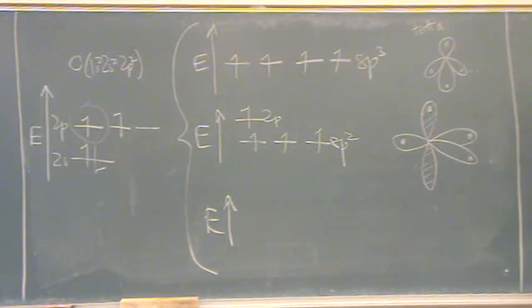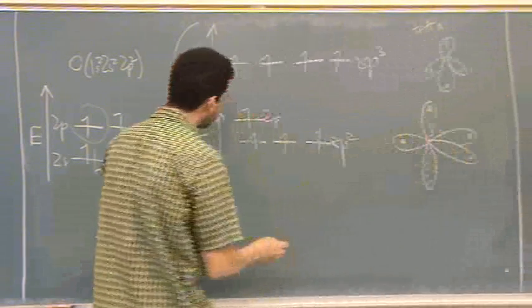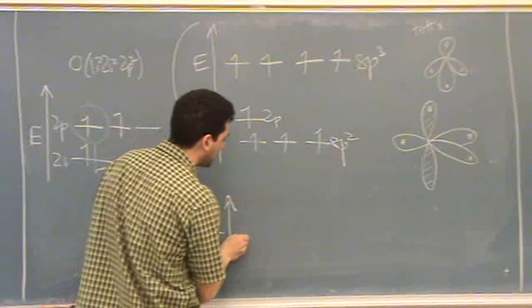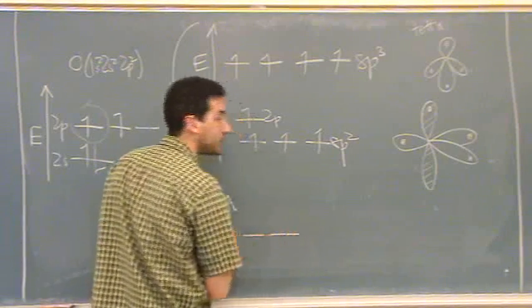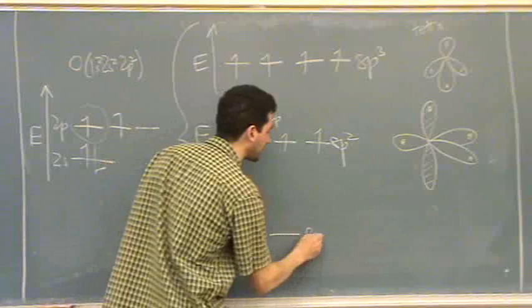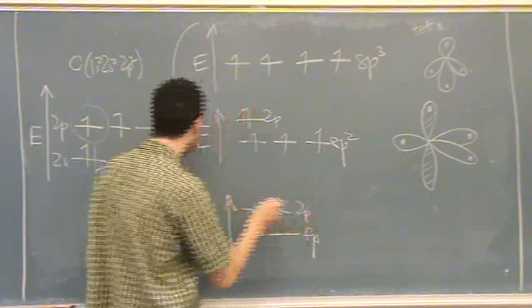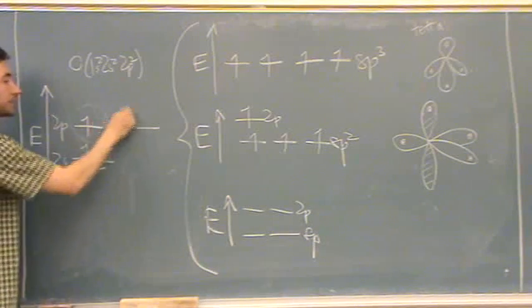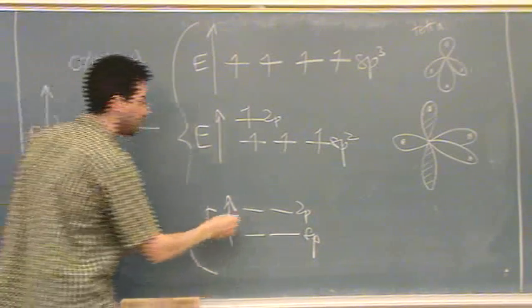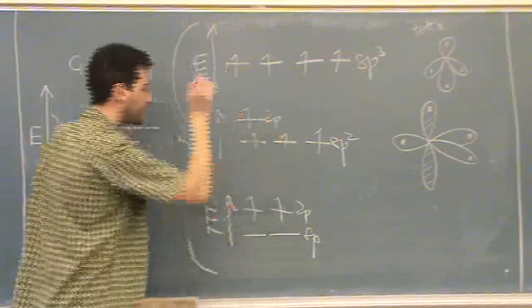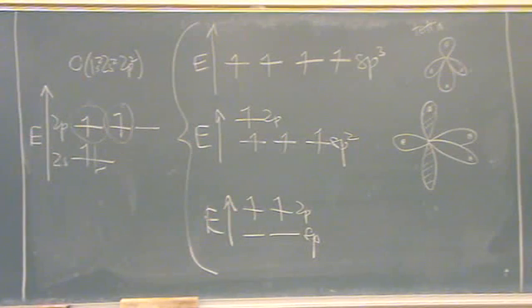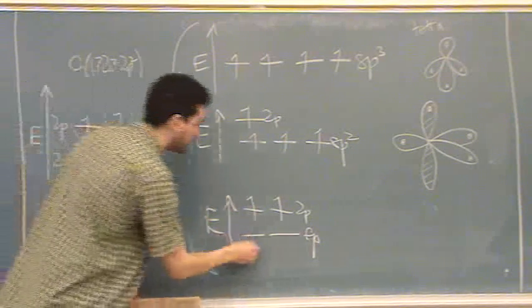That's the second possible way something can hybridize. Third possible that we're going to deal with is if one of the 2s's and one of the 2p's mix to form an sp, and then two of the 2p orbitals, this one and the next one over come in unaffected. They keep their electron. And so now there's two electrons left, one goes in each.